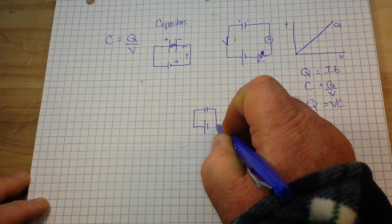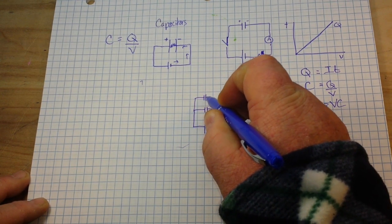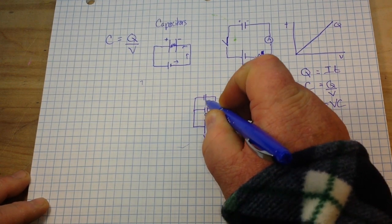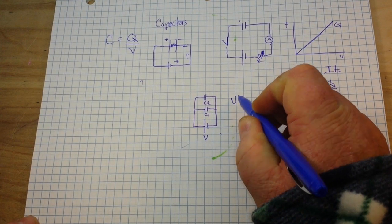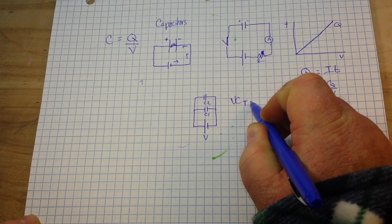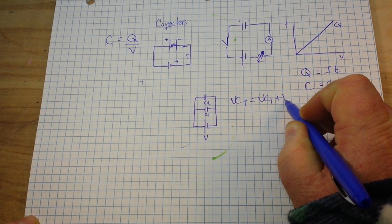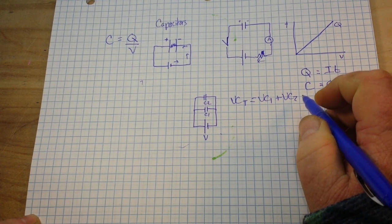So, if we have this circuit here, call this V, C1, and C2, our V C total is equal to V C1 plus V C2. Does that make sense?